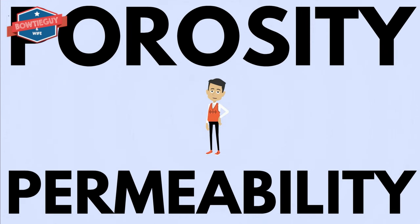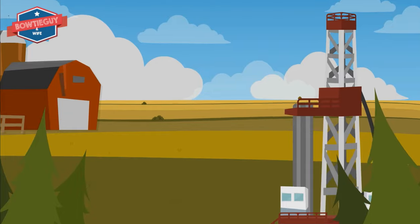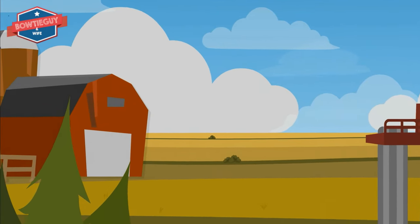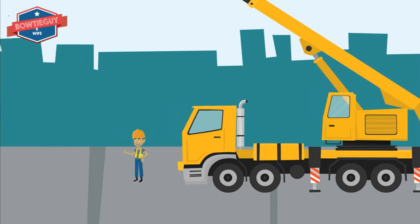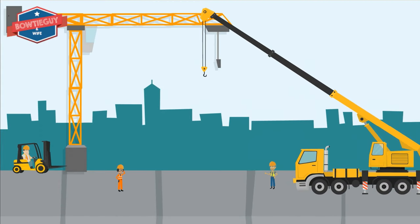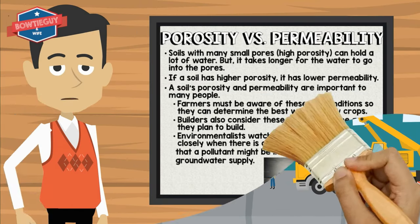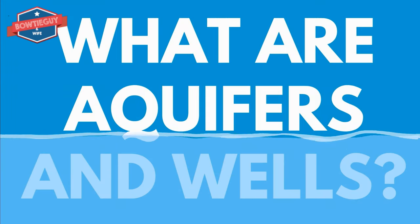Porosity versus permeability. Farmers must be aware of these soil conditions so they can determine the best way to grow crops. Builders also consider these conditions in the area in which they plan to build. Environmentalists watch porosity and permeability closely when there is a risk that a pollutant might be introduced into the groundwater supply.